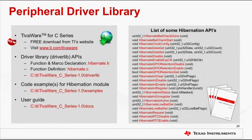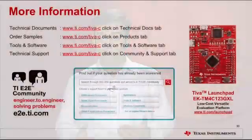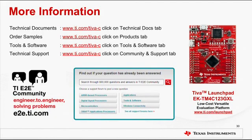More details about the functions including descriptions, prototypes, and arguments can be found in the driver library documentation available in TivaWare for C-Series. I strongly encourage you to take a look at that before using these functions. We have an extensive repository of documentation including device data sheets, user manuals, and application notes to strengthen your understanding of TM4C123X devices. If you have a technical question, you can contact Tiva C-Series experts on TI's E2E forum community at e2e.ti.com. Please visit ti.com/tiva-c for technical documents, ordering samples, downloading tools and software.